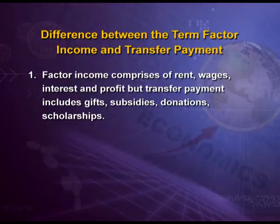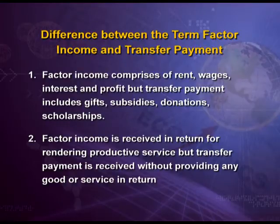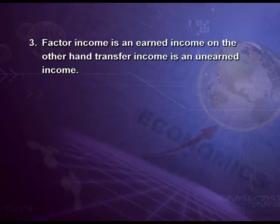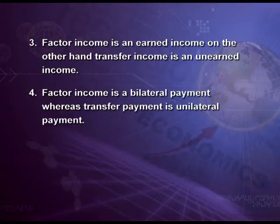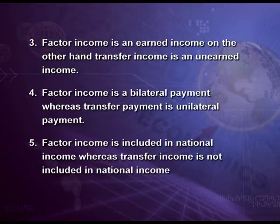On the other hand, transfer payments include gifts, subsidies, donations, scholarships, etc. Second difference: factor income is received in return for rendering productive services, whereas transfer payment is received without providing any good or service in return. Third difference: factor income is an earned income, whereas transfer income is an unearned income. Fourth difference: factor income is a bilateral payment, whereas transfer payment is a unilateral payment. Fifth difference: factor income is included in national income, whereas transfer income is not included in national income.